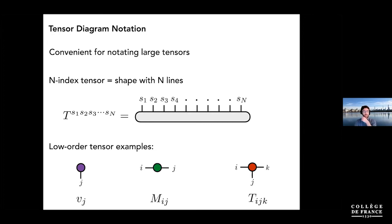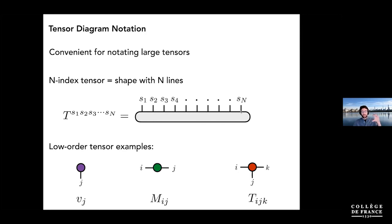In this notation, if you have a tensor with N indices, you draw it as some kind of shape. The indices are replaced by lines coming out of the shape — you can think of these lines as wires carrying a current or some setting. When you fix all the lines, you access one of the numbers inside the tensor. A vector has one line, a matrix has two, and so on. The key innovation is that rather than writing cumbersome index expressions, when two lines from different tensors meet, that means a sum is running on the joined index.